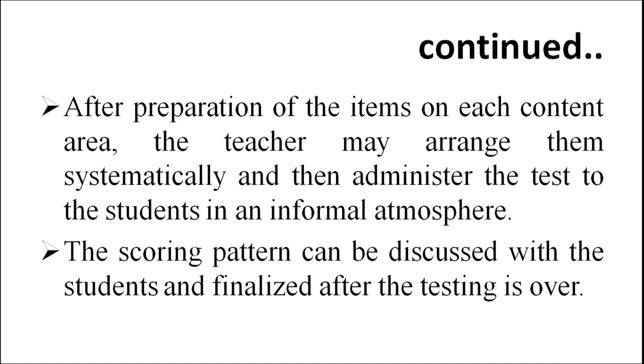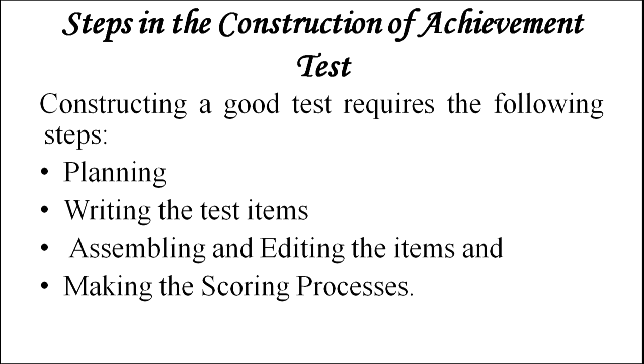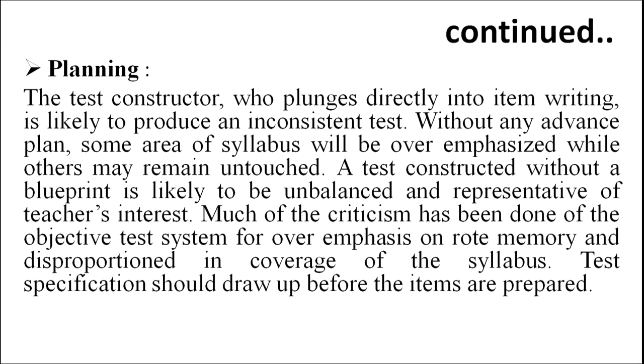The scoring pattern can be discussed with students and finalized after testing. Steps in the construction of achievement test: constructing a good test requires the following steps — planning, writing the test items, assembling and editing the items, and making the scoring processes. In planning, a test constructor who jumps directly into item writing is likely to produce an inconsistent test. Without any advance plan, some areas of the syllabus will be overemphasized while others may remain untouched. A test constructed without a blueprint is likely to be unbalanced. Test specifications should be drawn up before the items are prepared.